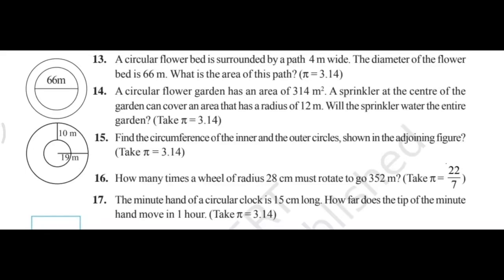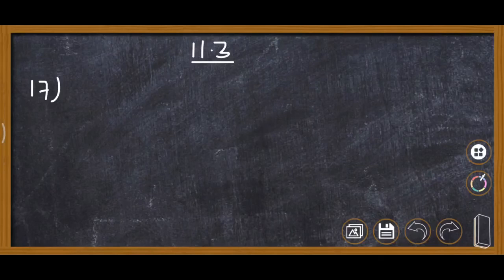This is question number 17 of Exercise 11.3. The minute hand of a circular clock is 15 centimeter long — this is the radius of the clock. How far does the tip of the minute hand move in one hour? The distance covered by the tip equals the circumference of the circle, since the radius is 15 centimeter.